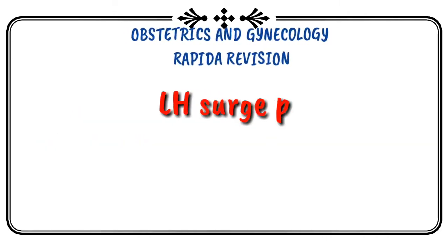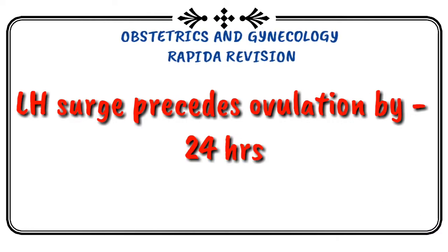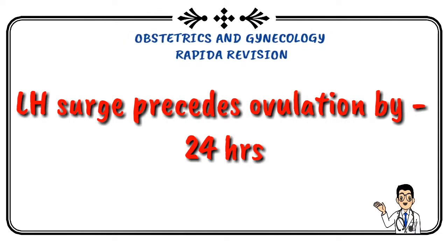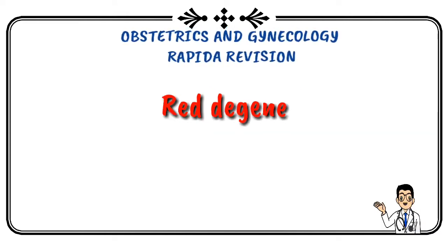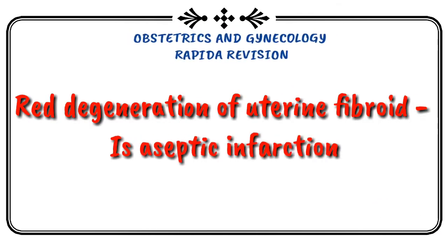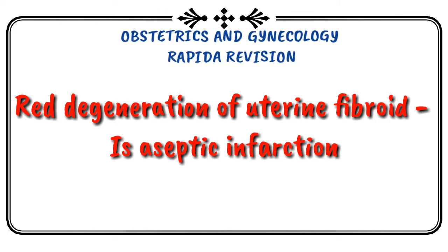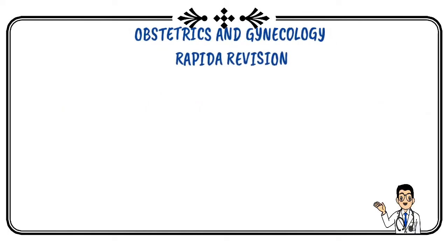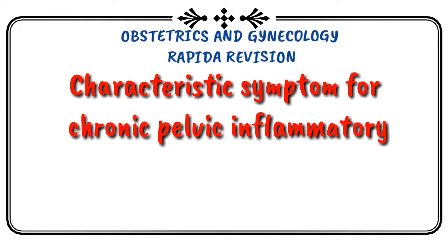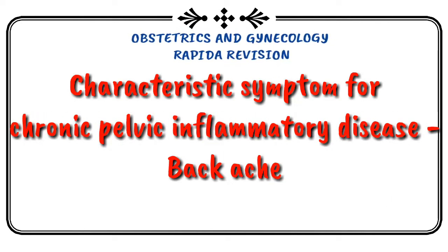Luteinizing hormone surge causes ovulation within 20 hours. Red degeneration of uterine fibroid is aseptic infarction.